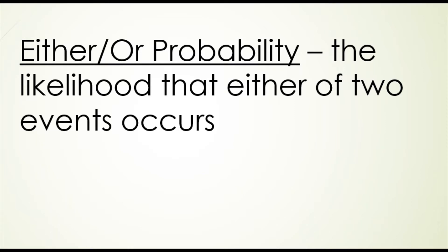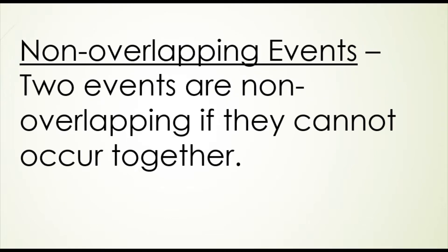Either-or probability is the likelihood that either of two events occurs. In the last lesson, we were talking about and probability, where we were trying to find the probability of event A and event B both occurring. Here, we're talking about the probability that either event A occurs or event B occurs. With and probability, we talked about independent versus dependent events. For either-or probability, we're concerned with non-overlapping events or overlapping events.